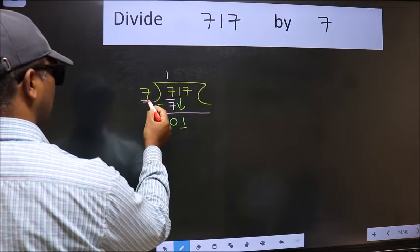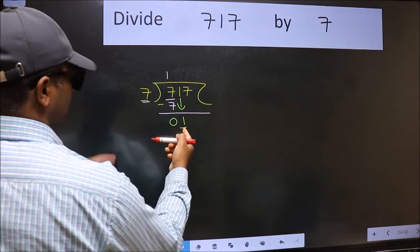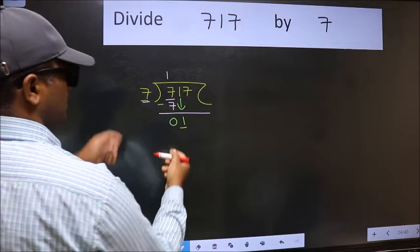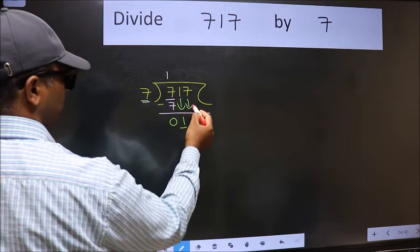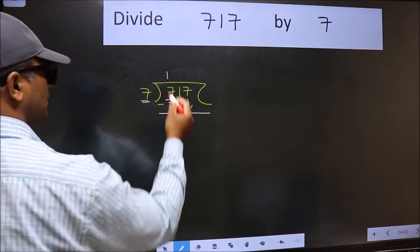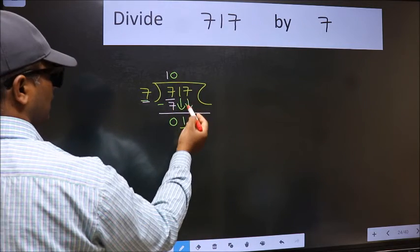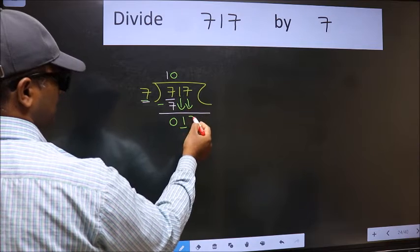Now here we have 1 and here 7. 1 is smaller than 7. So we should bring down the second number. And the rule to bring down the second number is we should put 0 here. Then only we can bring this number down.